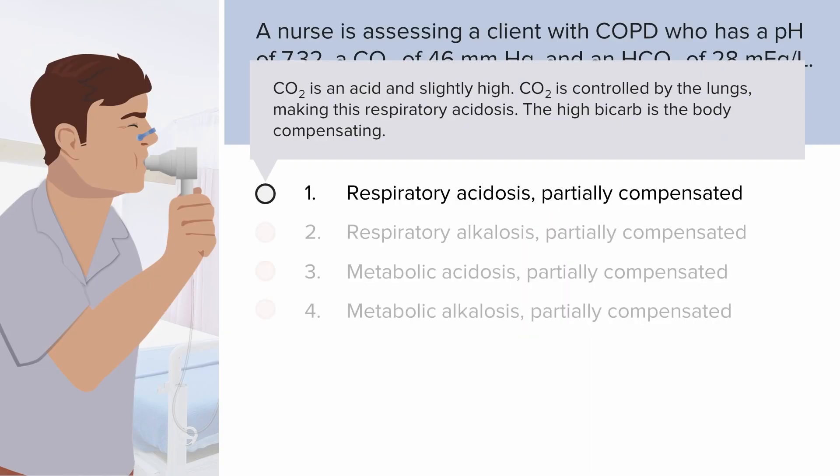The answer is respiratory acidosis, partially compensated. Why partially compensated? Because the pH is still 7.32 — it's outside of the normal range. In real life we might be fairly satisfied depending on what else is going on, but remember, in testing world and NCLEX world, these are perfect worlds.